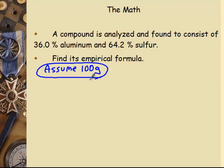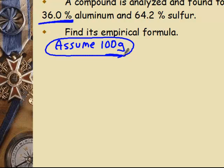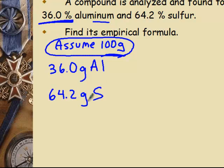Now, why 100 grams? Well, it doesn't matter what number of grams you pick, but I have to take 36% of however many grams I pick. So if I picked, let's say I wanted my favorite number of grams, 19.1 grams, I have to take 36% of 19.1 to tell me how many grams of aluminum I have. Picking 100 makes it easy because 36% of 100 is 36. So that means I have 36 grams of aluminum, 64.2 grams of sulfur.